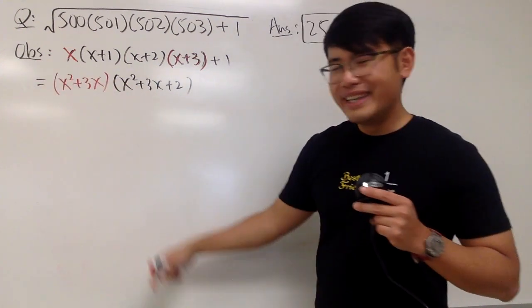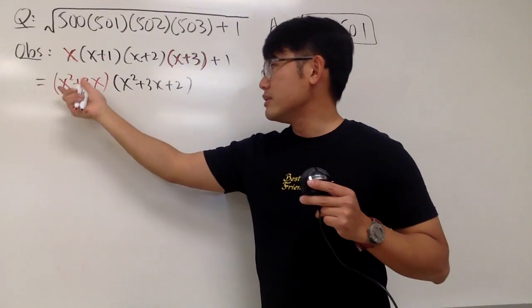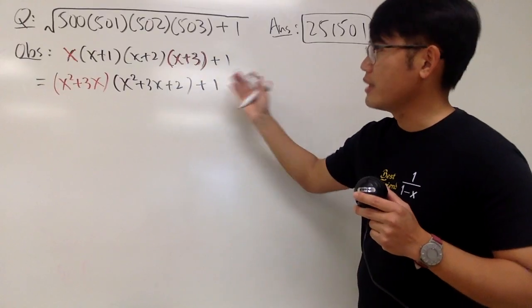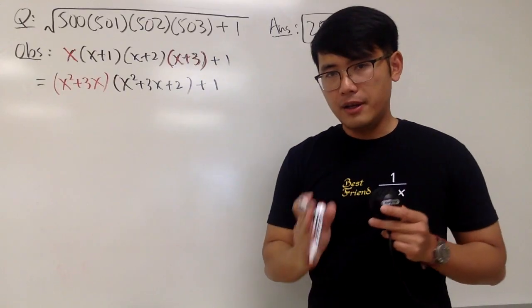They are going to be very similar because you are going to get x squared plus 3x. And notice, this right here has the plus 2. This right here is just the first two terms right here. So they are pretty similar to each other. And don't forget the plus 1 right here at the end. And now, here's the deal.